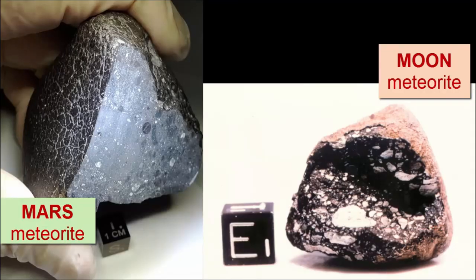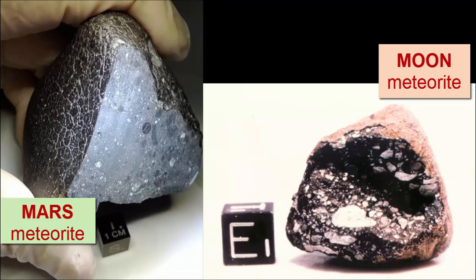Some younger meteorites are pieces of the crust of the Moon or Mars. We can distinguish those meteorites from the ones that are remnants of the formation of our solar system by their composition and younger age. Gathering up and studying meteorites also teaches us about the material that makes up the Earth.